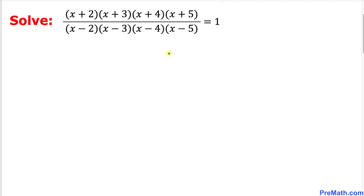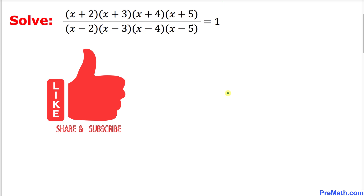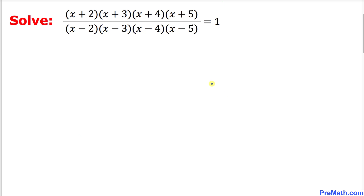Welcome to pre-math. In this video tutorial we are going to solve this given rational equation: (x+2)(x+3)(x+4)(x+5) divided by (x-2)(x-3)(x-4)(x-5) equals 1. Please don't forget to give a thumbs up to this video. Let's go ahead and get started with the solution.